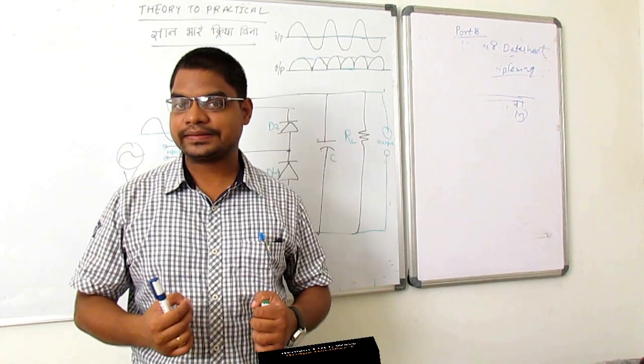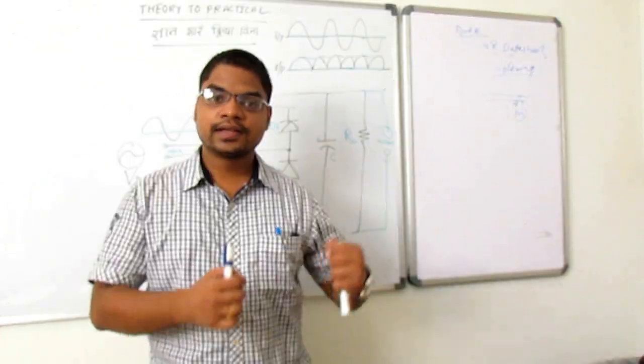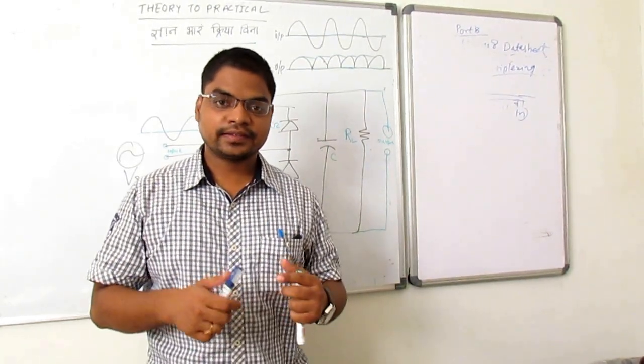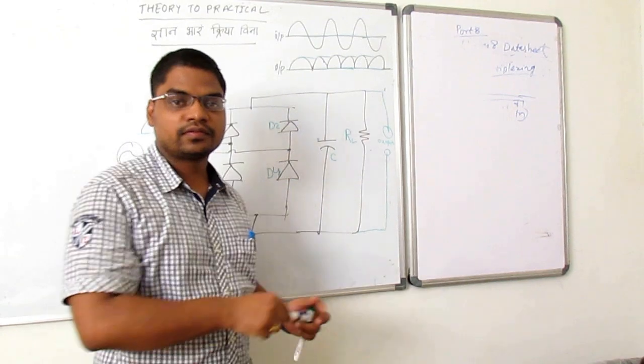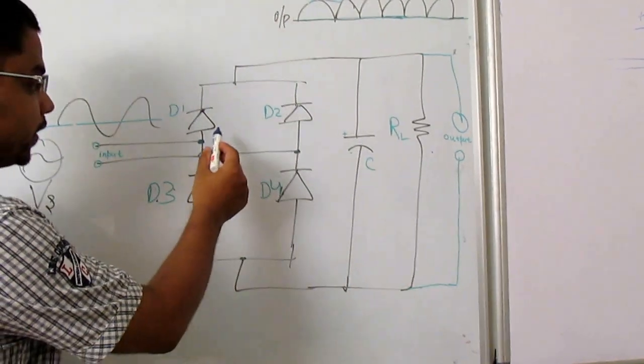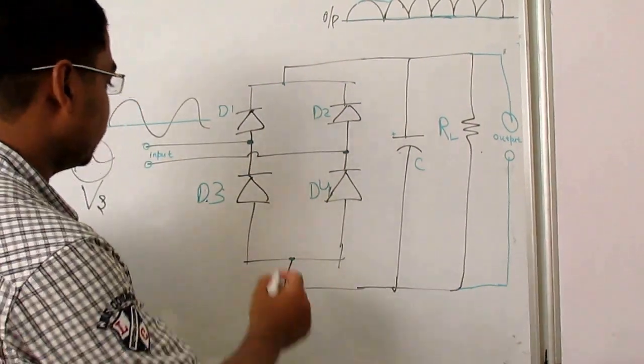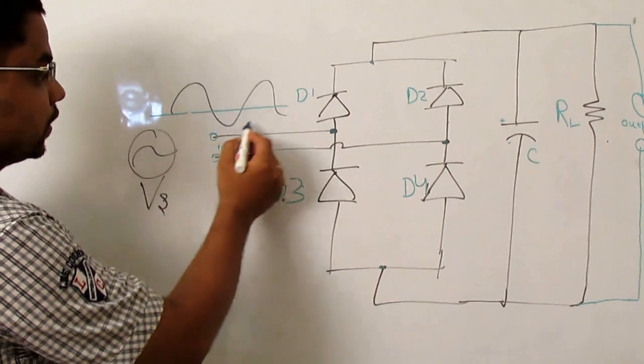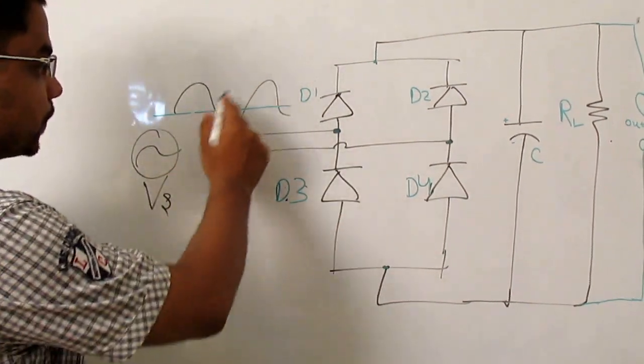The full bridge rectifier circuit is used for converting the AC signal into a DC signal. It has 4 diodes. This is the diagram of the full bridge rectifier. It has 4 diode D1, D2, D3 and D4. And we have applied here an AC source which has this waveform.